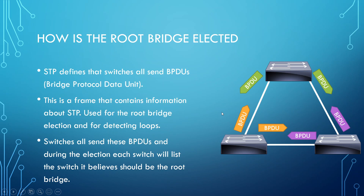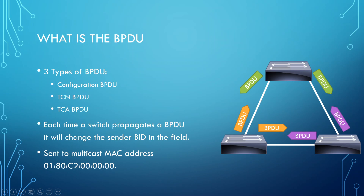The election process works like this: at the beginning, all switches believe they should be the root bridge. After a few seconds, they decide on one switch to be the root bridge. There are three types of BPDUs. There's the configuration BPDU, which lists information about the STP topology and is used for the election process. Then we have the Topology Change Notification, or TCN, BPDU.